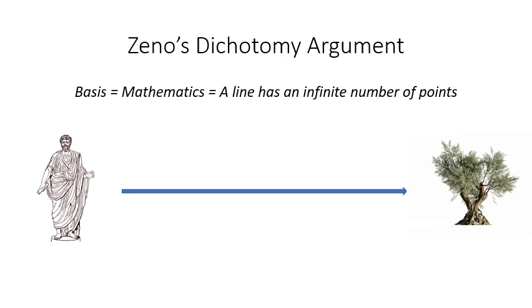So Zeno says, let's assume that a man wants to walk to the local garden, and let's further assume that it's 30 feet away. So in order for the man to get to the garden, he would have to traverse 30 feet of distance.